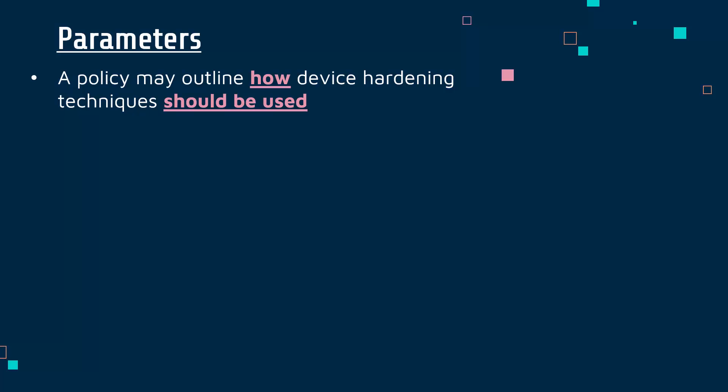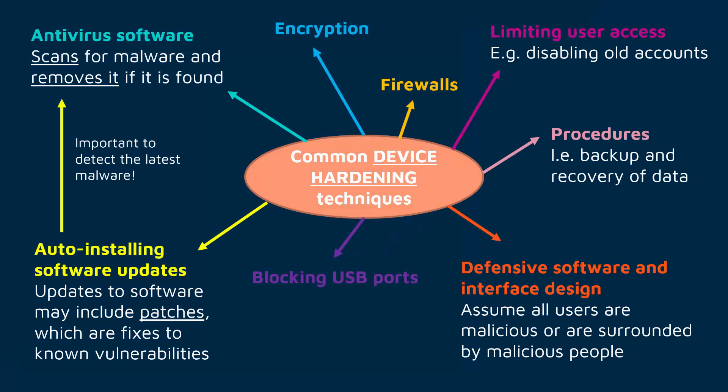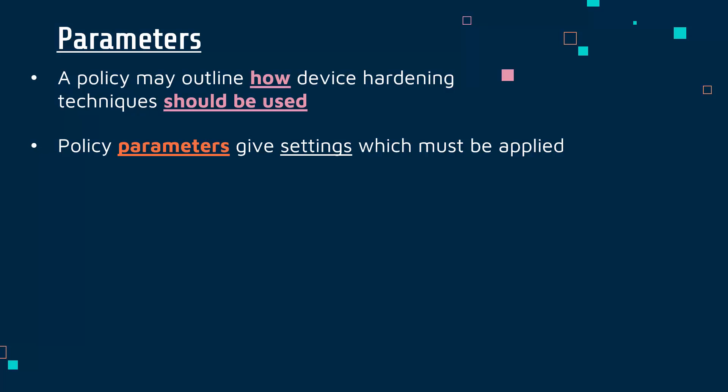A policy defines how hardening techniques should be used. For example, you could have a really expensive firewall as one of your techniques, but if you're not using it properly it defeats the whole point. So a policy might set out how it should be used. Within a policy there should be some parameters — a parameter in this context gives us some settings which need to be applied using the specified technique.